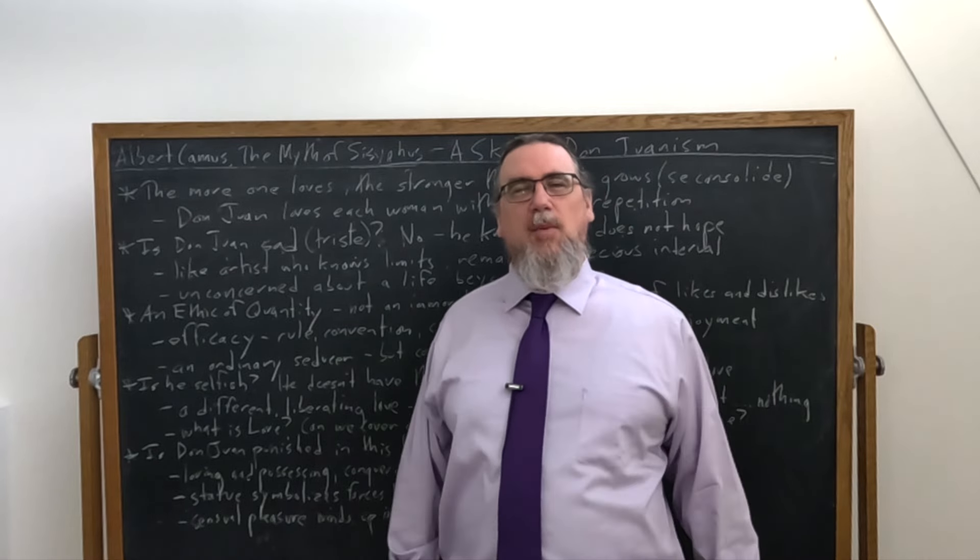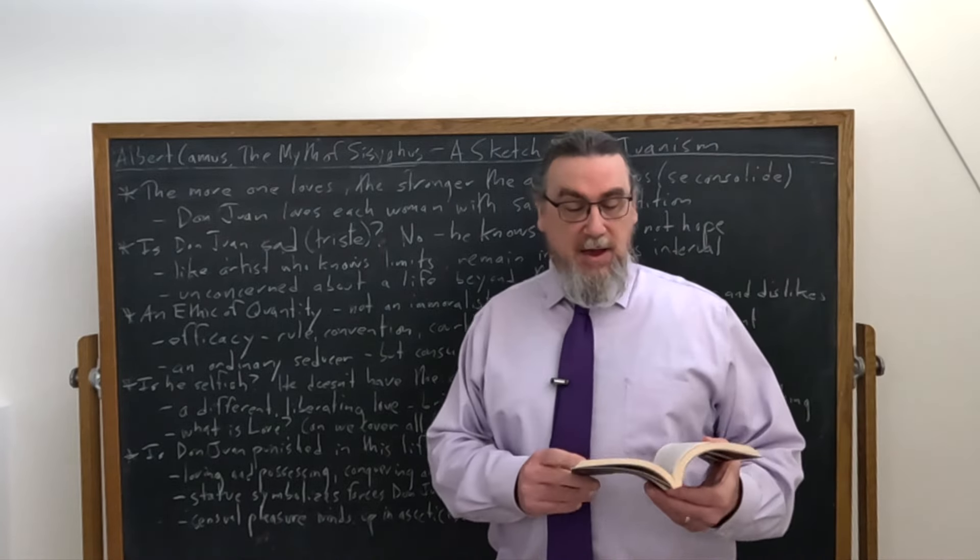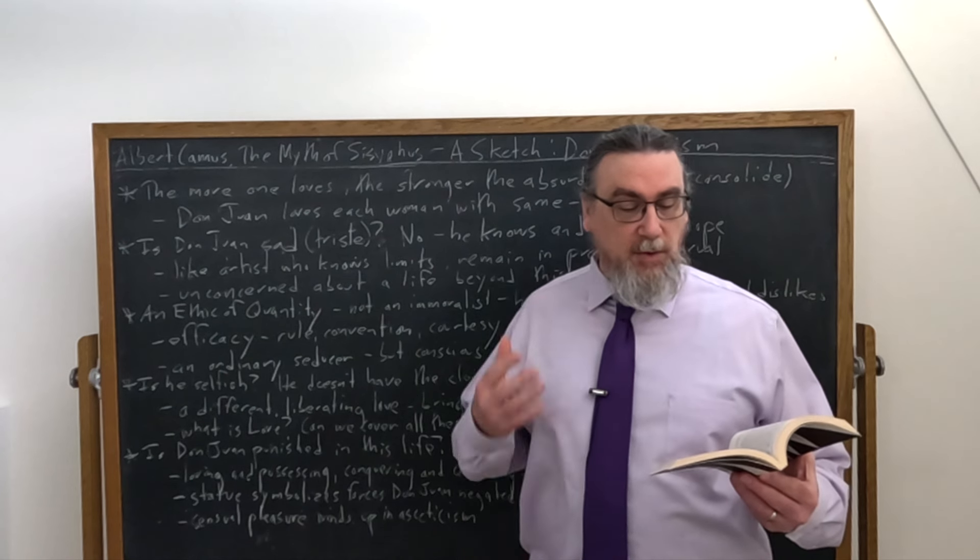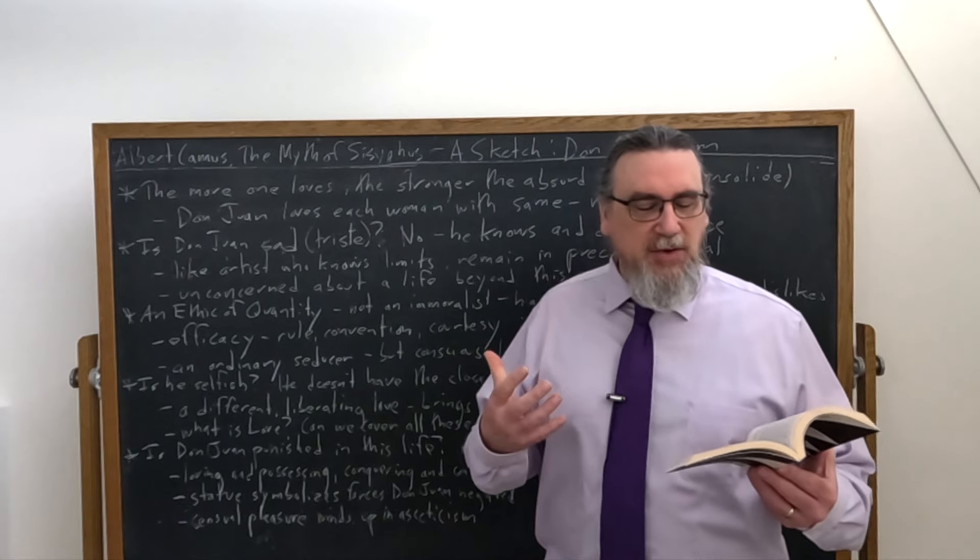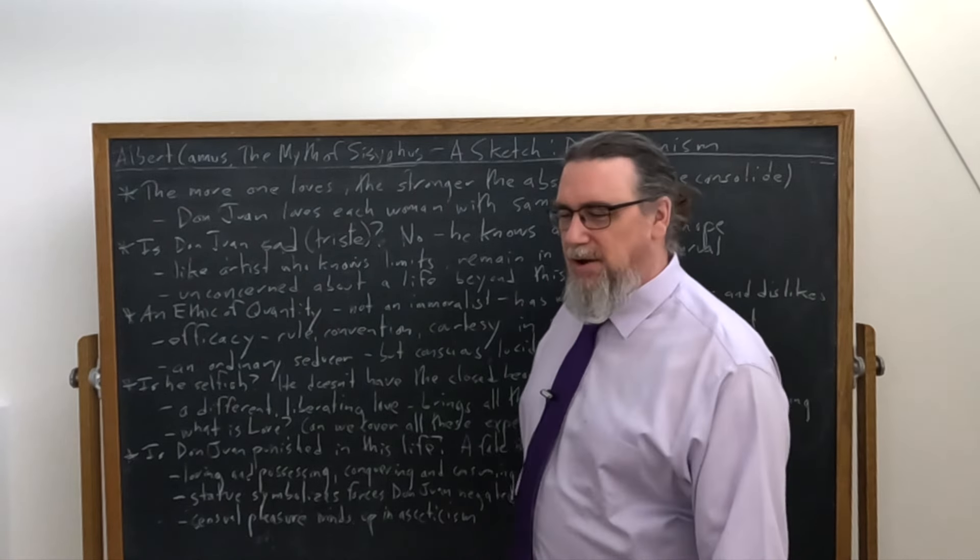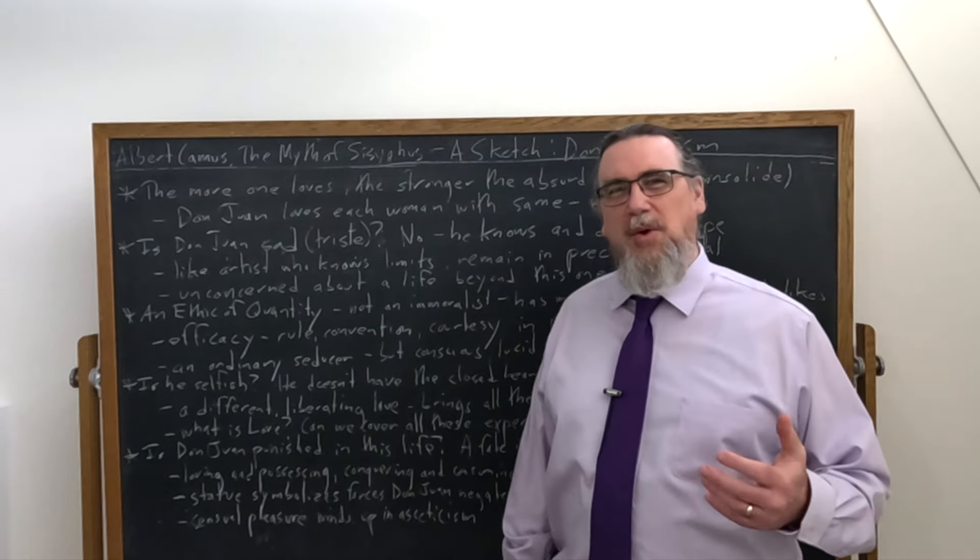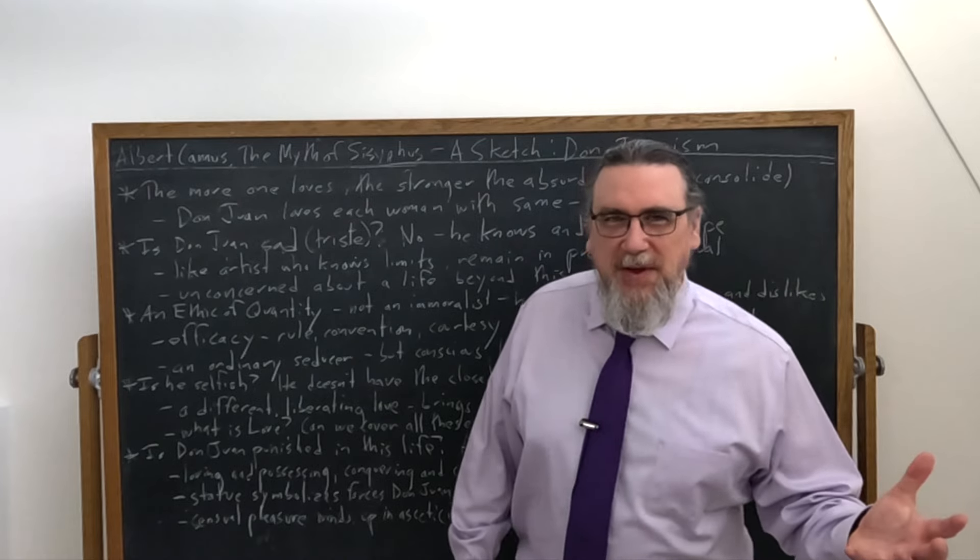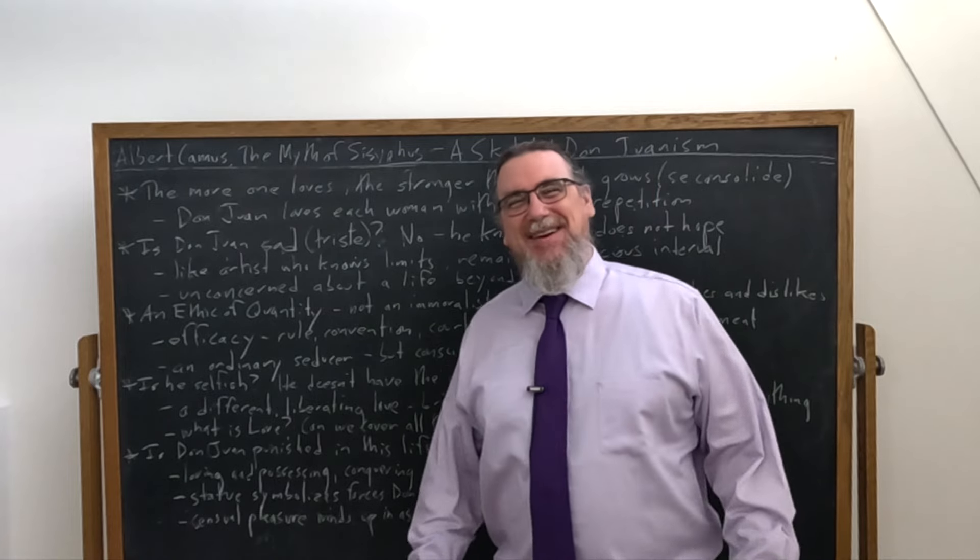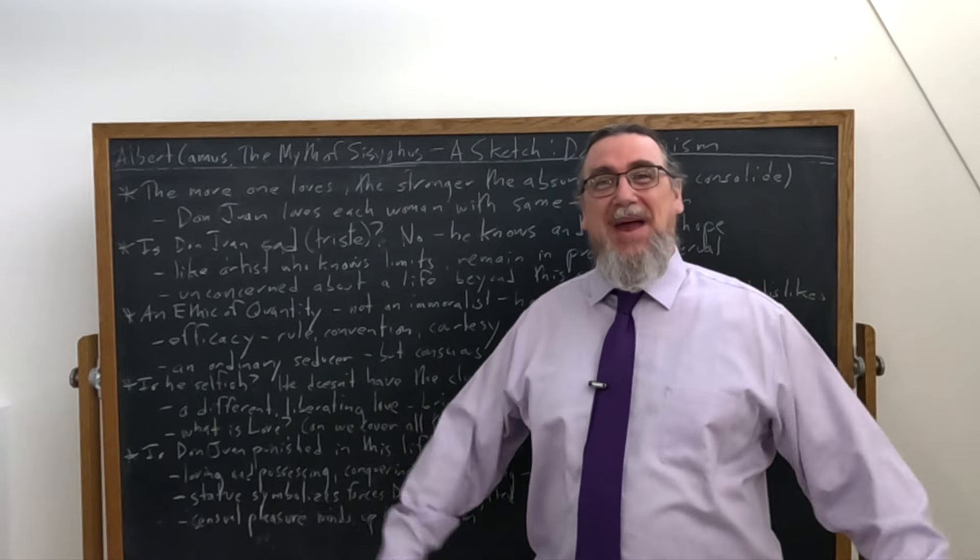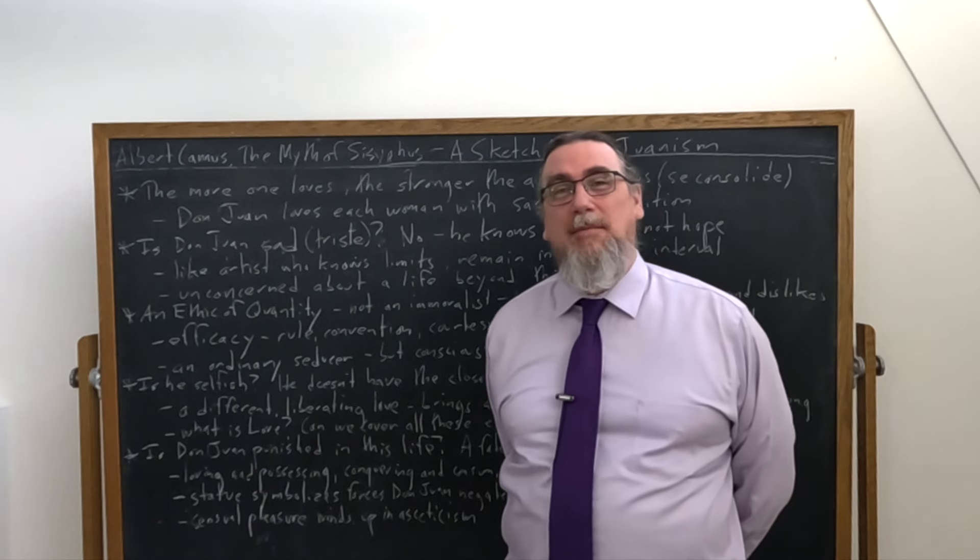What kind of love does Don Juan have? A different love from this, a liberating love, as Camus is going to say. And interestingly, so he's got this phrase, it brings with it all the faces in the world and its tremor comes from the fact that it knows itself to be mortal. Two important sides. Now, all the faces in the world, no, just women's faces, obviously, because Don Juan, that's his attraction. But that's still an awful lot of world out there. And so he's not going to hold himself back from any of that. For those who want to be seduced, he'll seduce you.